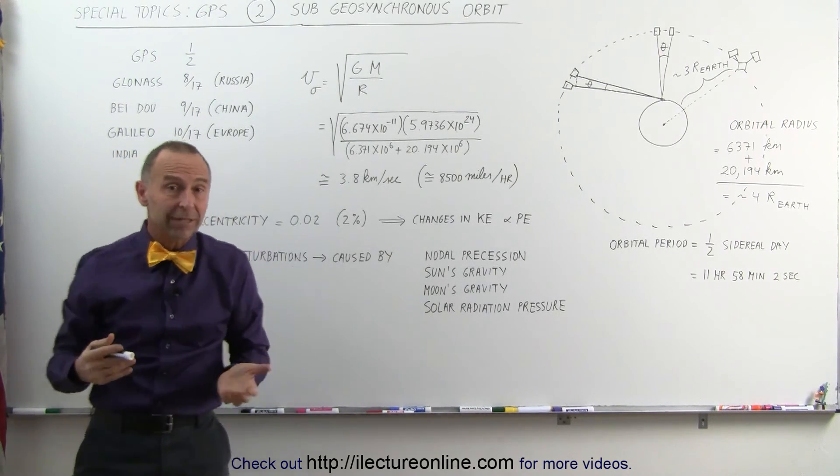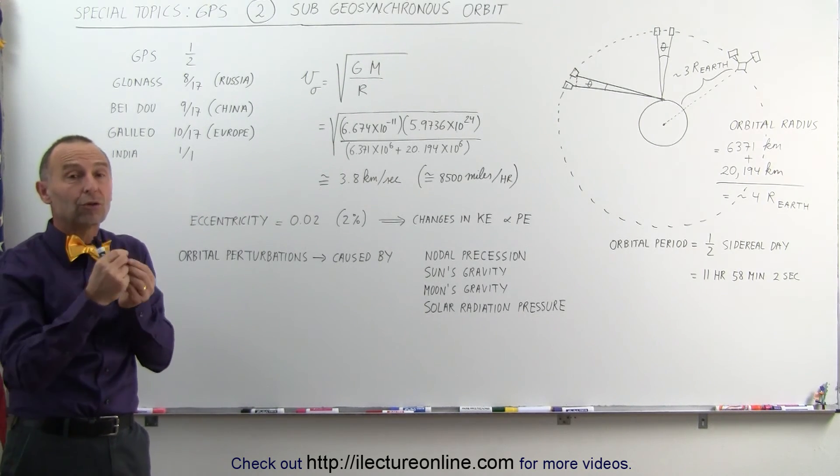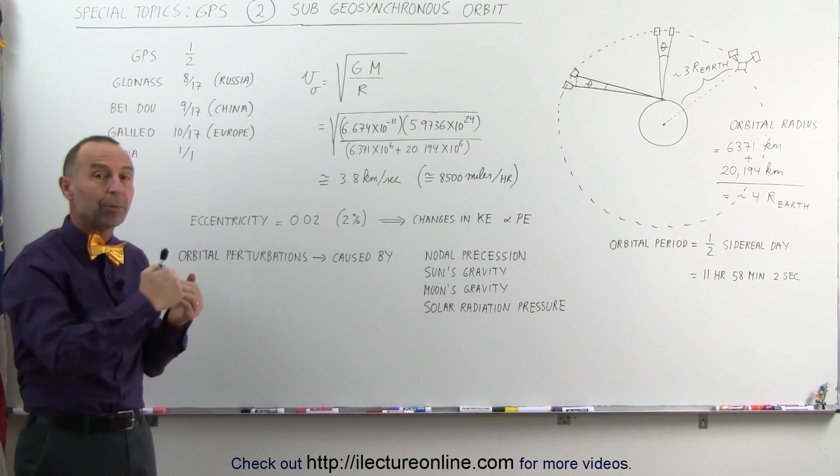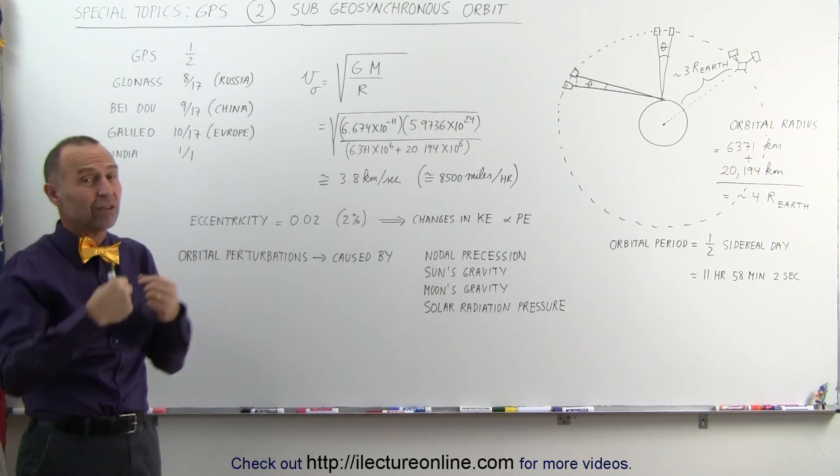As you will see later, that we want to keep very careful track of where the satellites are at, and because of that, we want to know the details of their orbit to be able to calculate and predict where those orbits are going to be, so we can tell the GPS receivers.